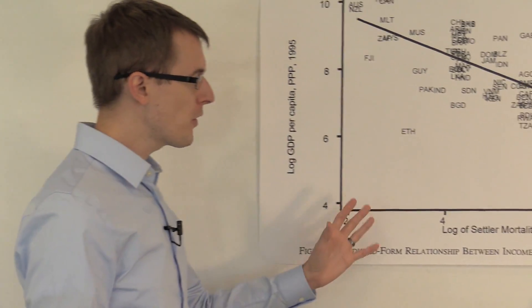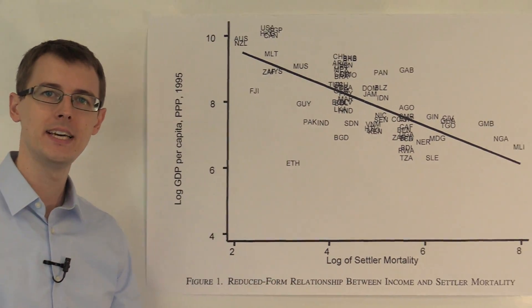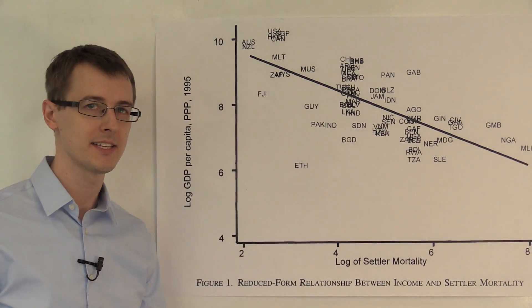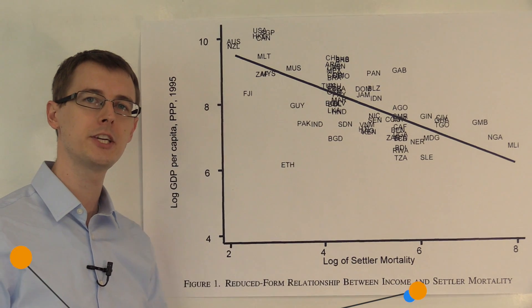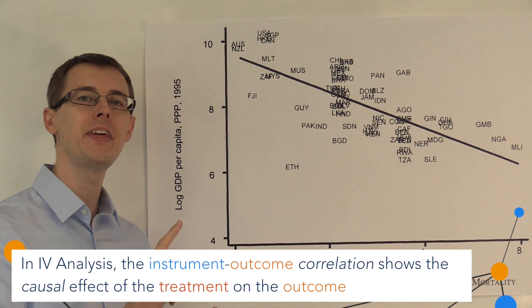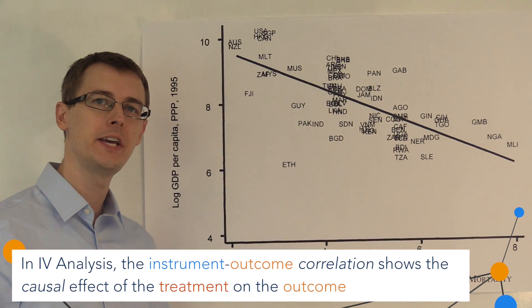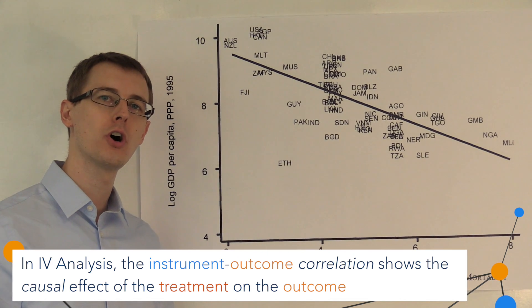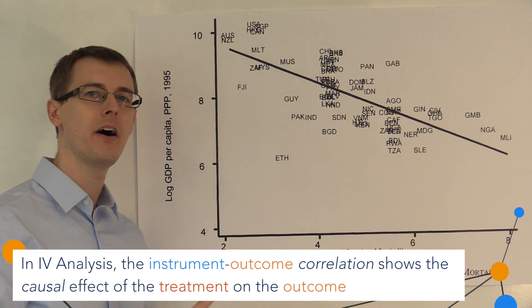And we'll put these issues aside and just see what they get. So the first thing, remember the main idea behind instrumental variables analysis is that we look at the correlation between the instrument and the outcome. And that correlation reflects the true causal effect of the treatment on the outcome.